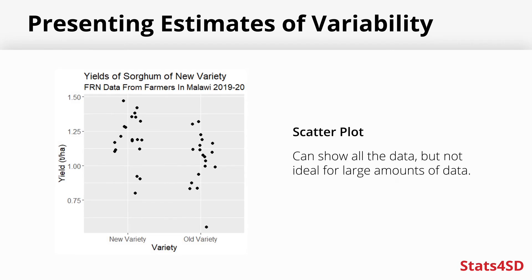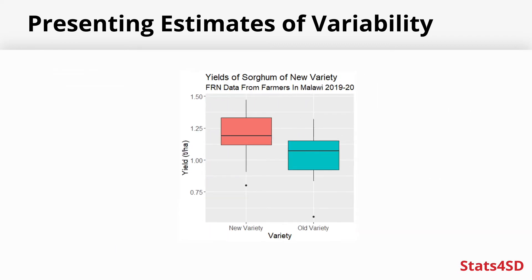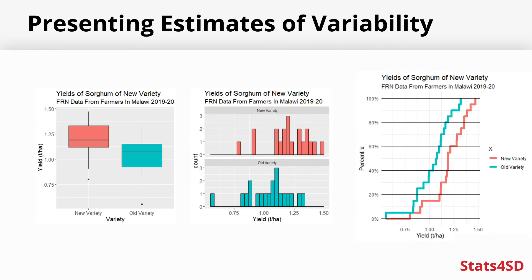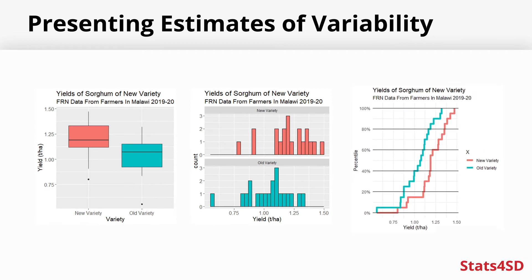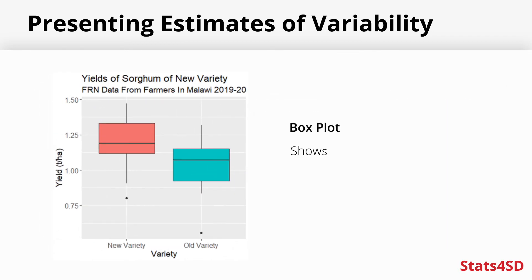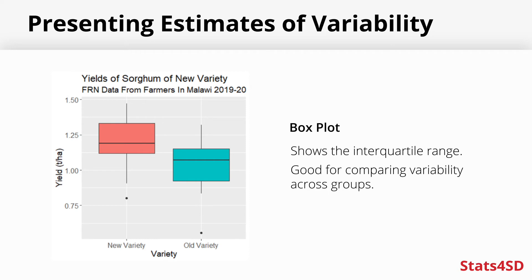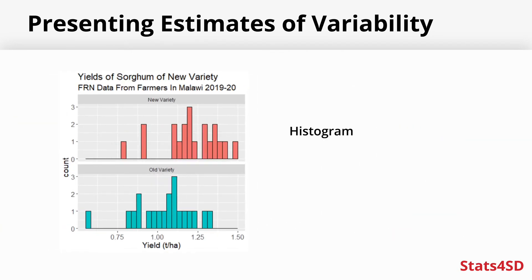There are lots of good options for visualizing variability. Scatter plots can show you all the data, but if you've got a lot of data they're not so good — which is where summary plots like a box plot, histogram, or cumulative frequency plot come in. The box plot is closely linked to the interquartile range, showing the lower and upper quartile as the box boundaries, which gives a good idea of variability, especially when comparing across groups. The histogram shows you the distribution, letting you see the variability and how it varies across groups.